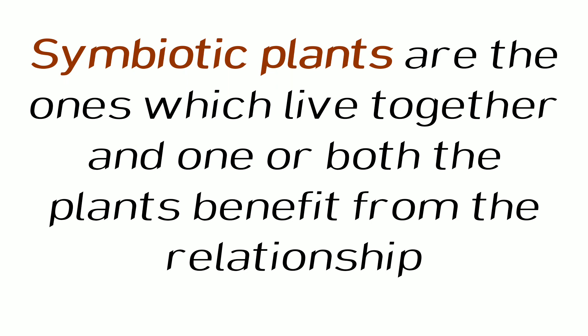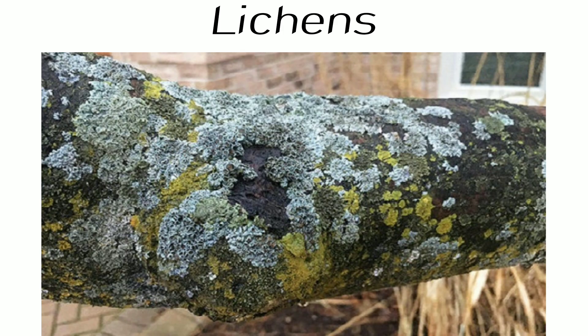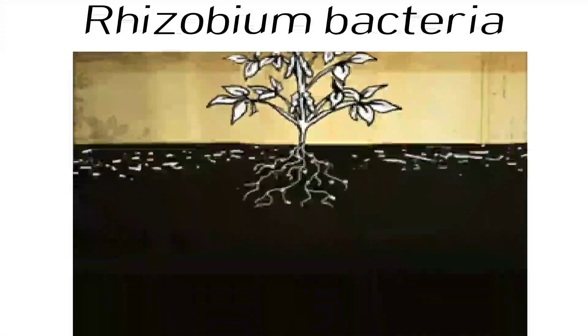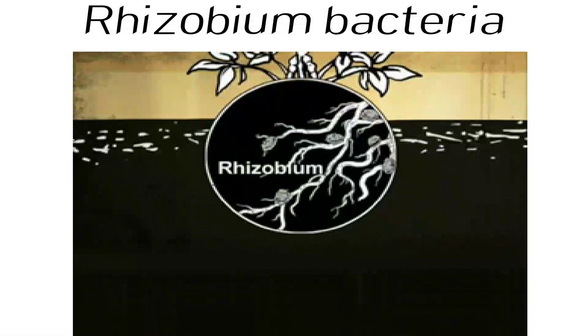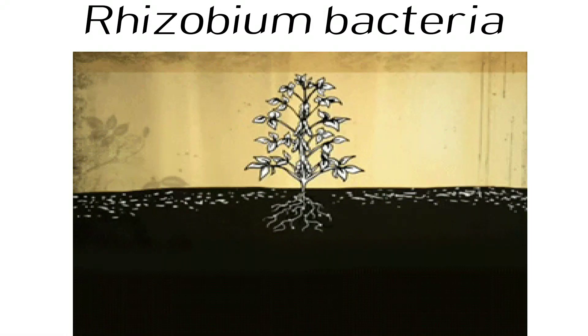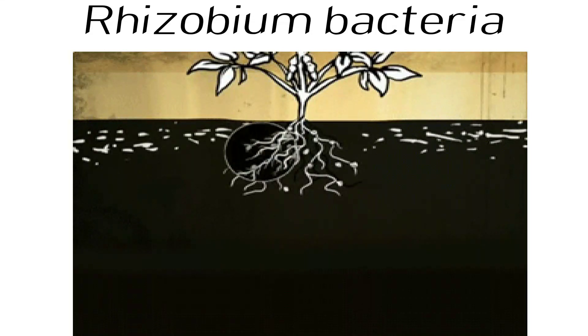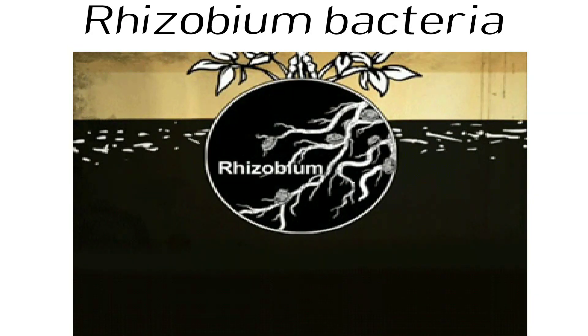Symbiotic plants are those which live together, where one or both organisms benefit from the relationship. An example is lichens, which you may have seen on the bark of trees. Lichens, which are a fungus growing on algae, help each other to obtain the necessary nutrition. Another example is Rhizobium bacteria, which are present at the root nodes. Rhizobium bacteria provide nitrogen to the plant, and in return the plant provides food to the Rhizobium.